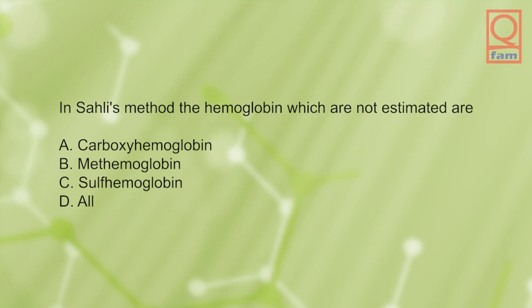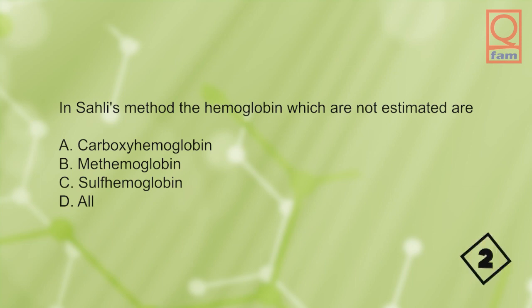In Sahli's method, the hemoglobin types which are not estimated are: A) carboxyhemoglobin, B) methemoglobin, C) sulfhemoglobin, D) all. The answer is D, all.